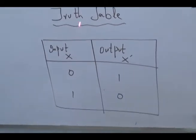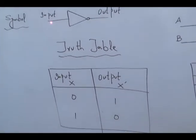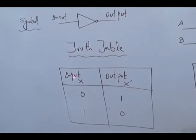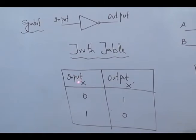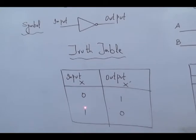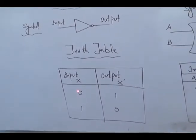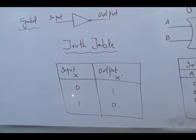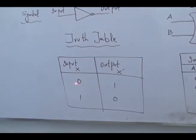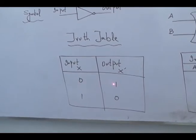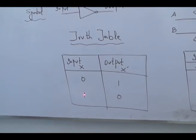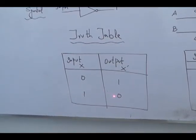The truth table is the tabulation of different combinations of inputs which gives the output. Since this NOT gate has only one input and one output, there are two possible combinations of this input. Either the input is low or the input is high. If the input is low, the output will become high, and if the input is high, the output will become low.